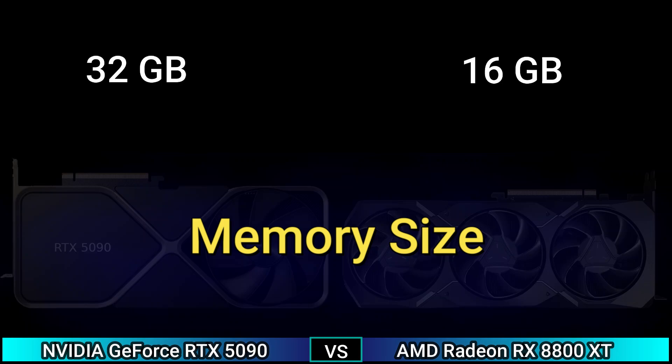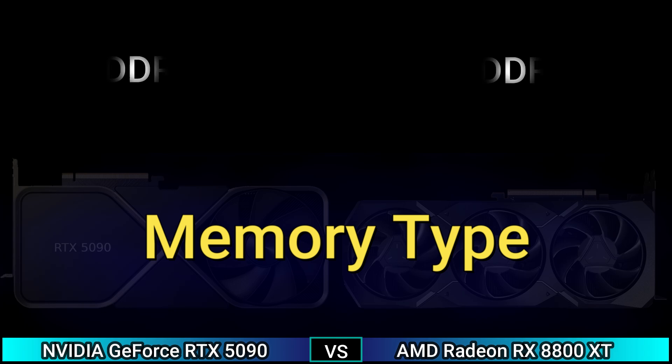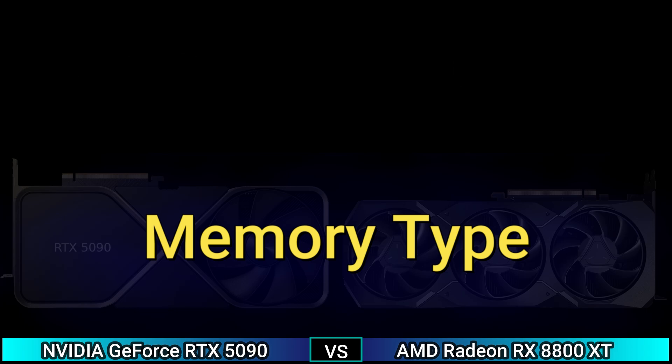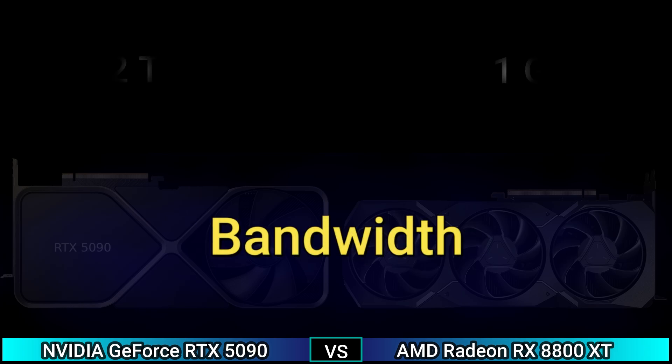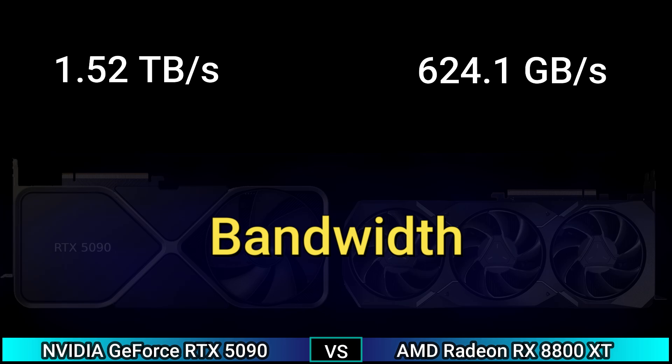Memory: size 32GB and 16GB. Memory type GDDR7 and GDDR6. Memory bus 512-bit and 256-bit. Bandwidth 1.52 TB/s and 624.0 GB/s.